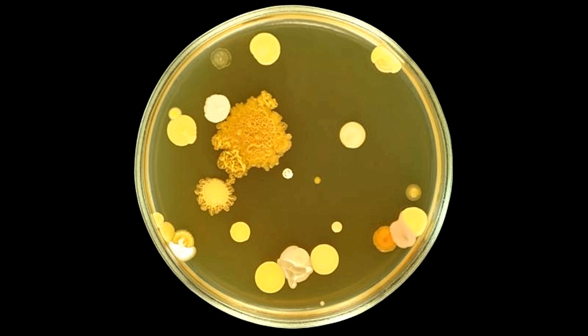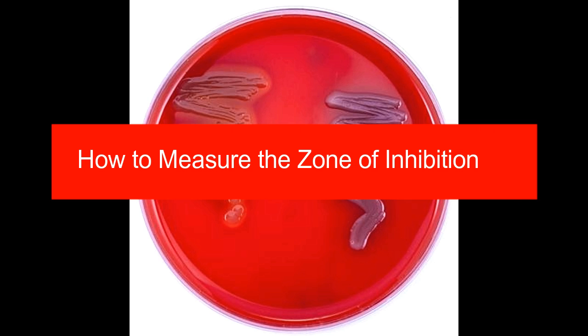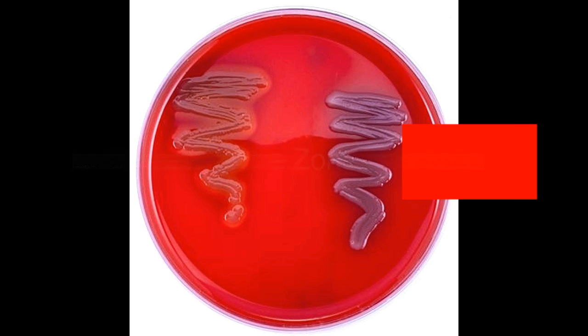How to measure the zone of inhibition: The zone of inhibition is measured using a ruler, a pair of calipers, or with the help of a template. Its size is measured in millimeters and usually rounded off to the closest millimeter. The diameter of the disc is also included. These measurements are done by the naked eye without the help of any instrument. The measurement of the diameter is made from the back of the plate.